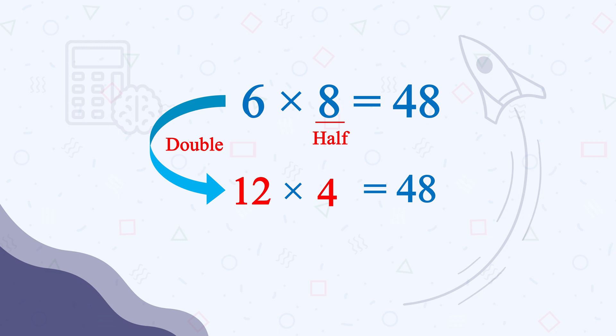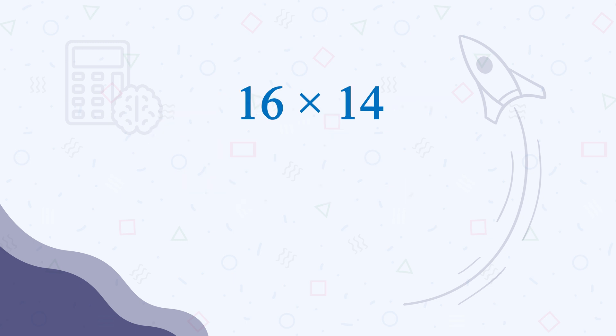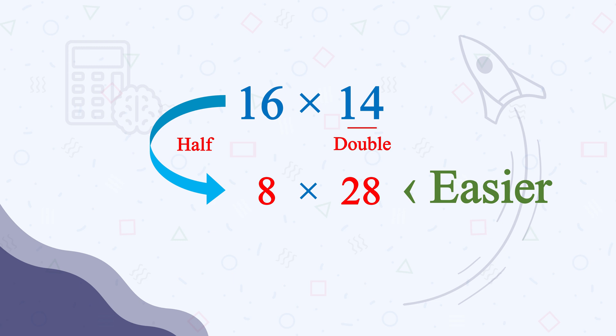I know 6 times 8 is very easy; no one needs to use this method for this particular calculation. But suppose we are multiplying 16 times 14. If we make 16 half of it, which is 8, and then take the double of 14, which is 28, we will get the same answer. And it is much easier calculating 8 times 28 than calculating 16 times 14.